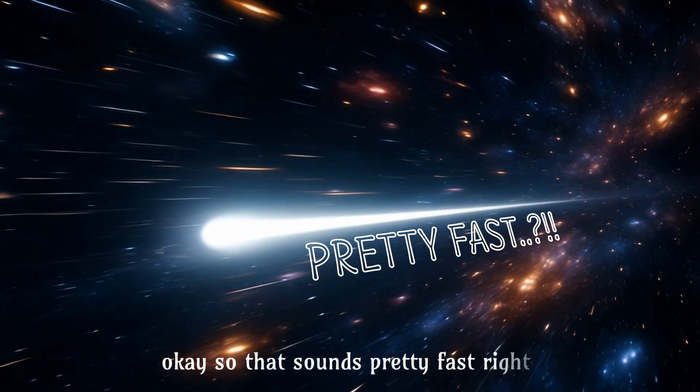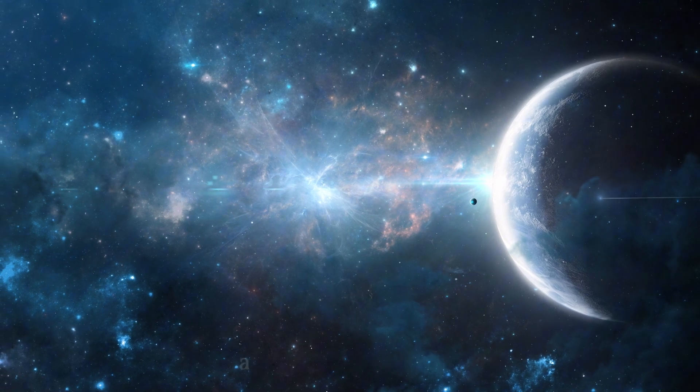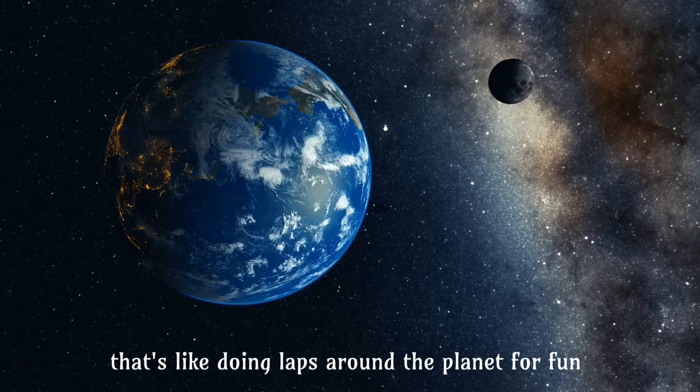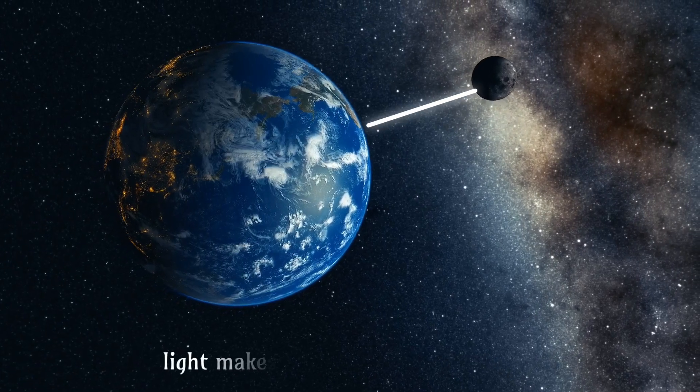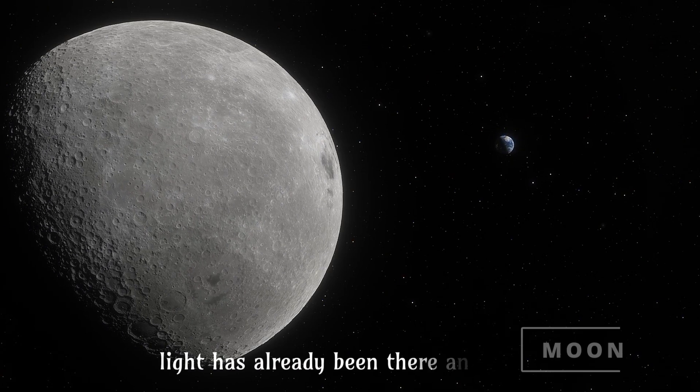Okay, so that sounds pretty fast, right? Let's keep going. In one minute, light could circle the Earth's equator about 449 times. That's like doing laps around the planet for fun. From here to the moon, light makes that trip in 1.28 seconds. By the time I say moon, light has already been there and back.